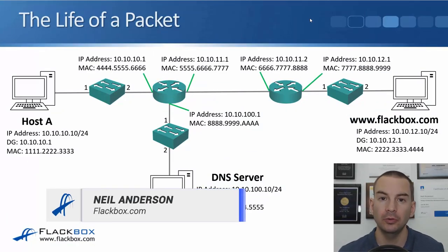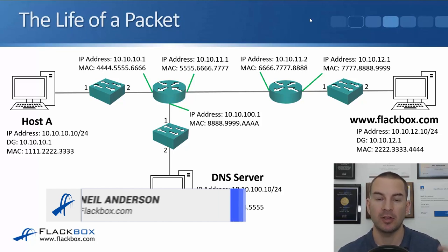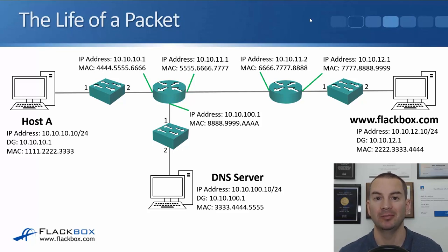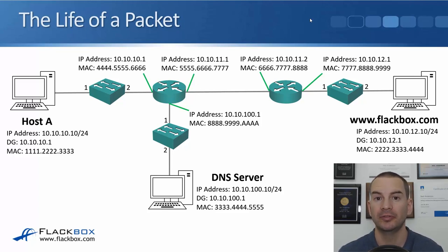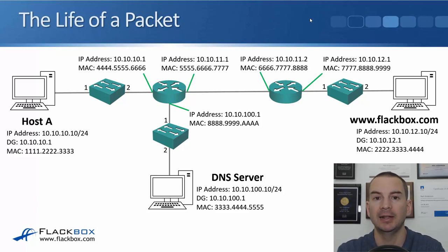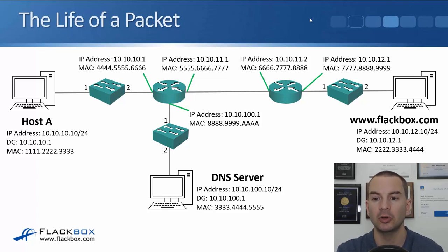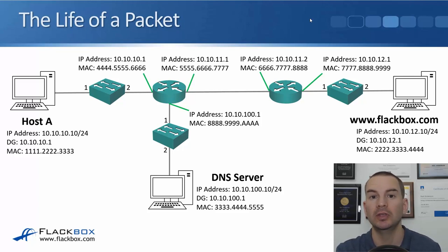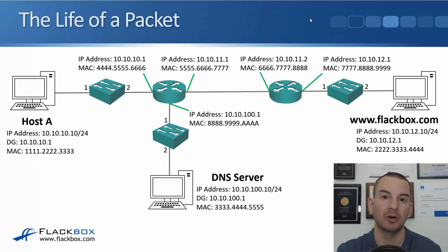In this lecture we're going to walk through the life of a packet from the sender through to the receiver and how everything works together to make that possible. It's a review of what we've covered already, but it ties everything together. In the example, we've got Host A on the left sending HTTP traffic to our web server at www.flackbox.com using the FQDN, which also requires DNS resolution. It's a routed network with different IP subnets and a couple of routers in the middle.